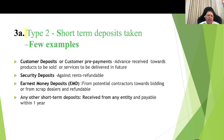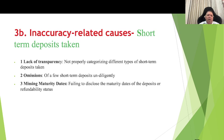Type 2 — short-term deposits taken. Examples include customer deposits or advance payments received towards products to be sold or services to be delivered in future, security deposits against rents, refundable earnest money deposits from potential contractors towards bidding or from scrap dealers, and any other short-term deposit received from any entity and payable within one year.